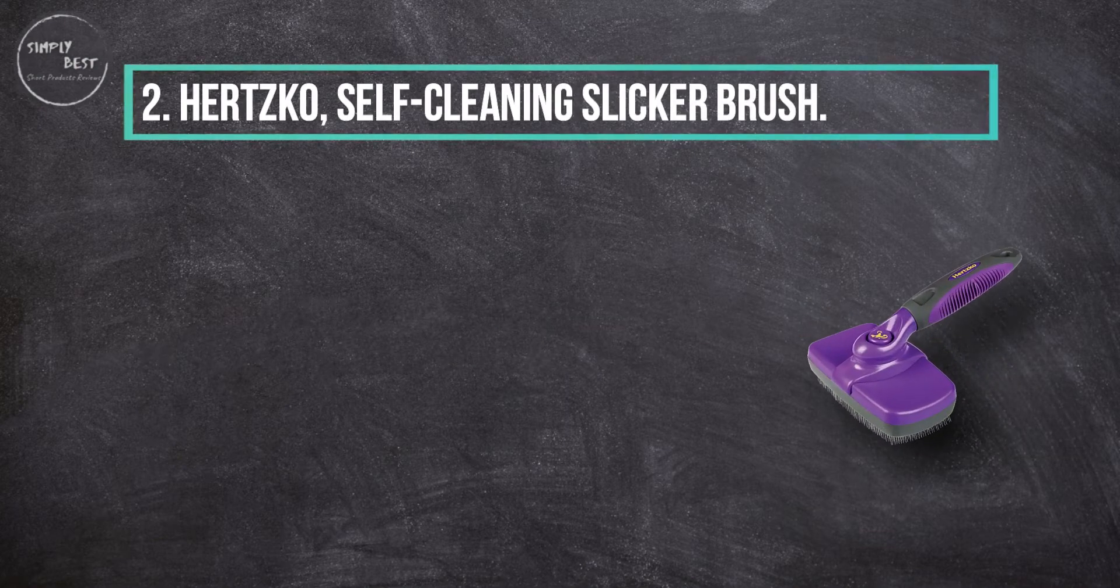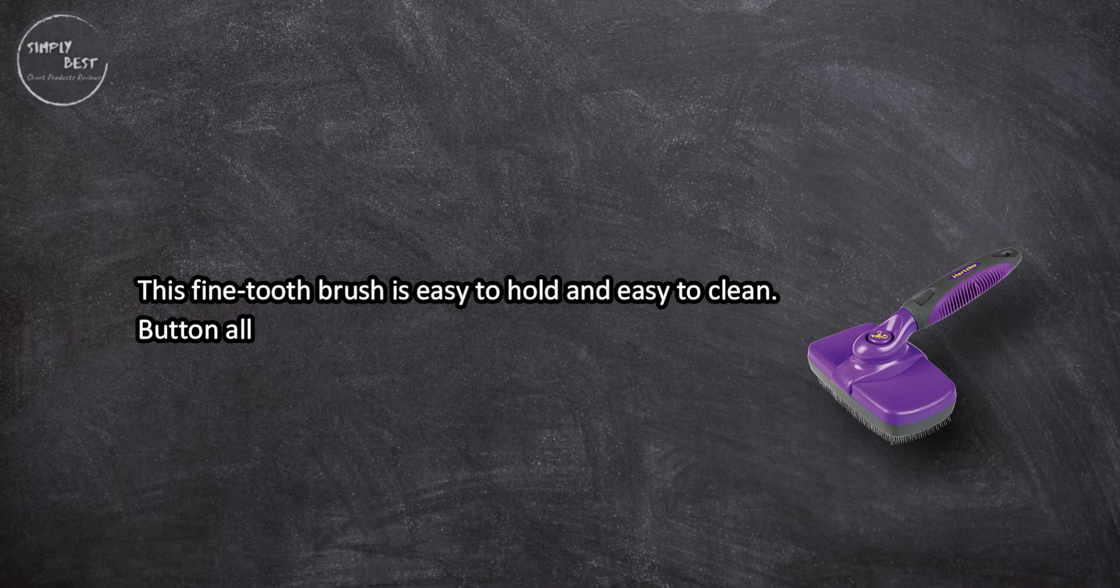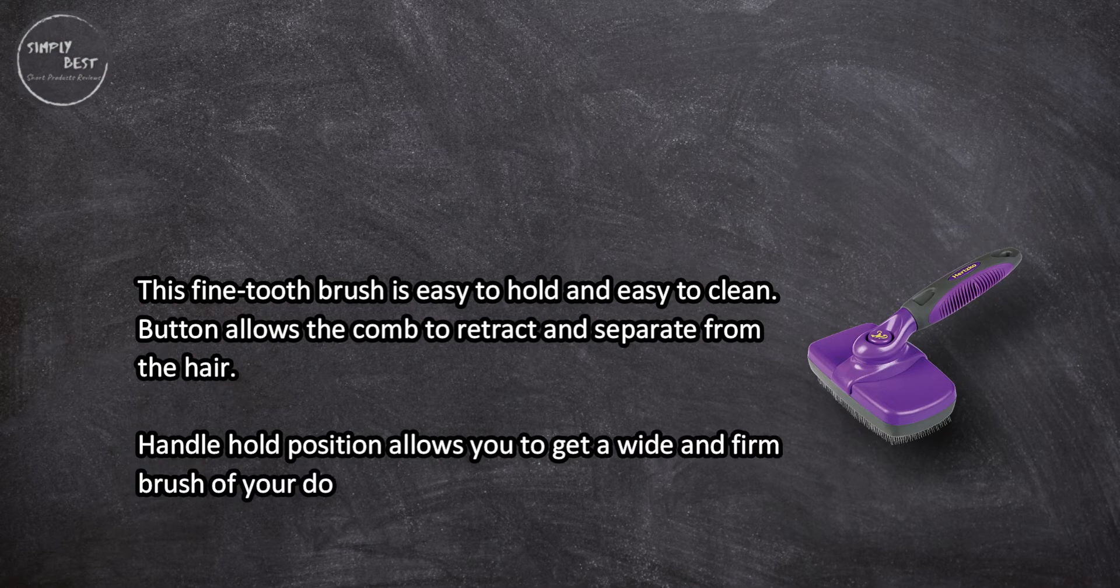At number two: Hertzko Self-Cleaning Slicker Brush. This fine-tooth brush is easy to hold and easy to clean. The button allows the comb to retract and separate from the hair. The handle hold position allows you to get a wide and firm brush of your dog's coat without hurting your dog.